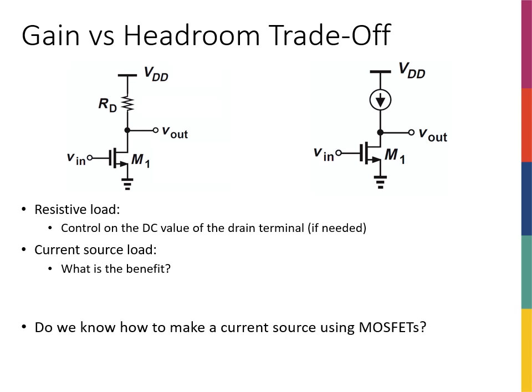Now let's put the two cases side by side. For the common source amplifier with a resistor, from the earlier slide, the gain Av = −gm·Rd = −√(2·μn·Cox·W/L·Id)·Rd. For the current source load amplifier, the gain is simply −gm·r-naught.